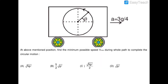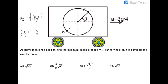Moving to the next question in this comprehension: we need to find the minimum possible speed during the whole path when the body completes circular motion. The minimum possible speed occurs at the point directly opposite the equilibrium position, which is point C. So v_C equals √(g_effective × l), and since g_effective = 5g/4, v_C equals √(5gl/4).